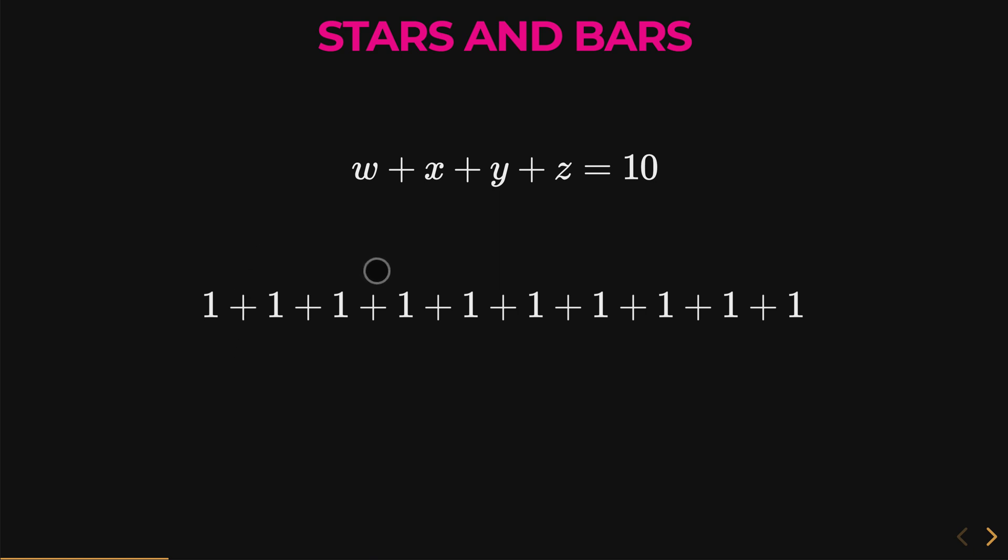Basically what you do is you can split up these ones. Here's an example of that. Let's say we split up, since we have four variables, of course we have three bars which will split into four groups for our four variables. This is just an example of one way you can split it. And when you split it like this, you have one plus one plus one in this little group right here. That will be three, you can say that's w.